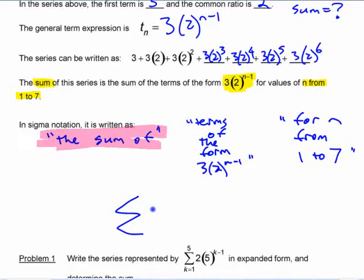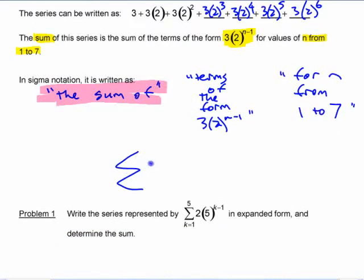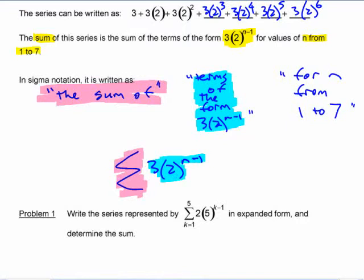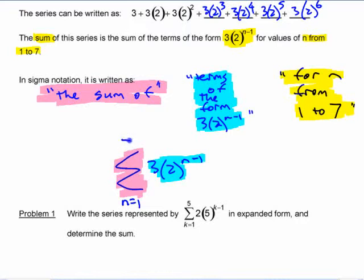Terms of the form, so sum of, and then we're going to put that formula right after. So sigma three times two to the n minus one. This thing means the sum of. This means terms of the form. For values from one to seven. Because without anything there, we don't know what the values of n are. So you put n equals one, the starting value underneath the sigma, and you put the end value above the sigma here. Maybe the highlighting is a little bit distracting, so let's write it out without the highlighting.